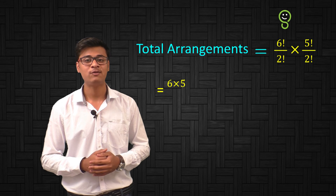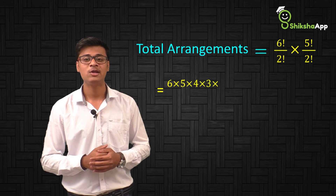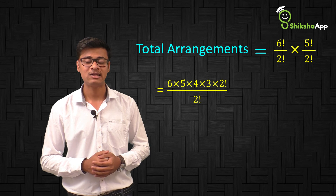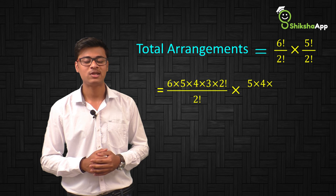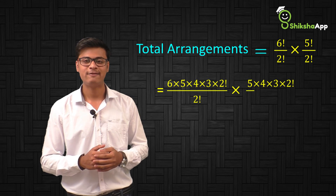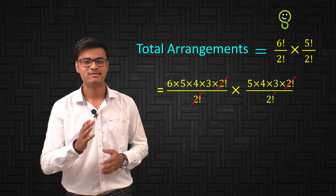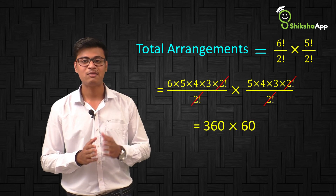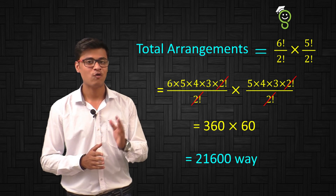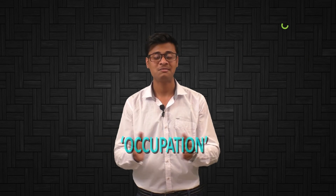6 factorial can be written as 6 × 5 × 4 × 3 × 2 factorial, divided by 2 factorial. Multiplied by 5 factorial written as 5 × 4 × 3 × 2 factorial, divided by 2 factorial. The 2 factorials cancel out, giving us 360 × 60, which equals 21,600. So the letters of the word OCCUPATION can be arranged so that vowels always come together in 21,600 ways.